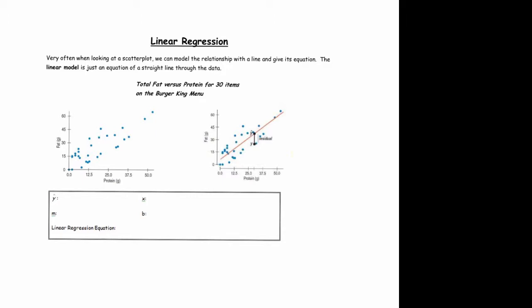Here we have a relationship between the protein and fat content for 30 items at Burger King. Generally speaking, as the protein content goes up—the number of grams of protein increases—the number of grams of fat does as well.